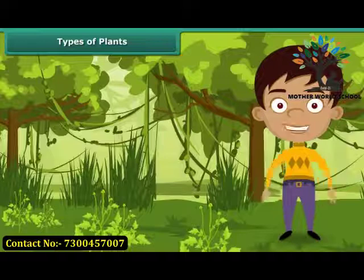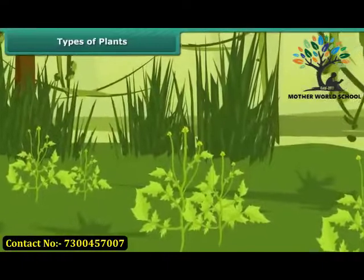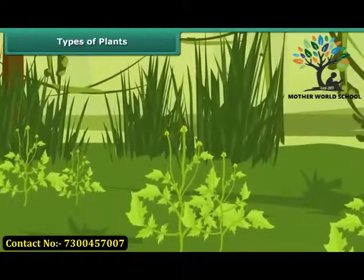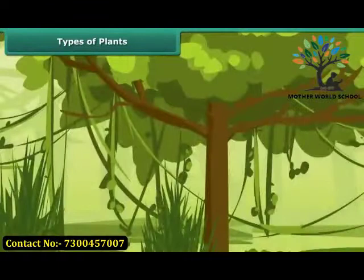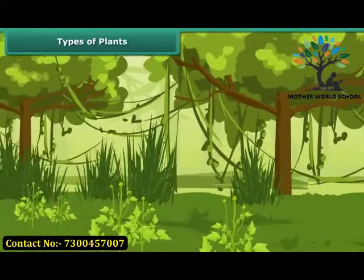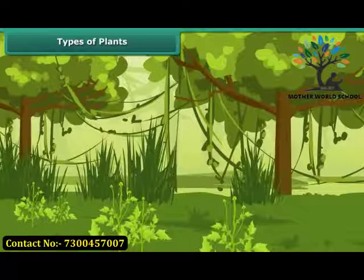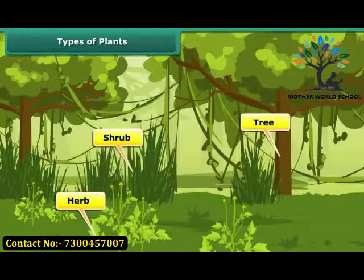We see different kinds of plants growing around us. They vary in their appearance — some are short while some others are tall, some are tender whereas some others are hard. In fact, plants can be classified into three categories as herbs, shrubs, or trees based on their characteristics.